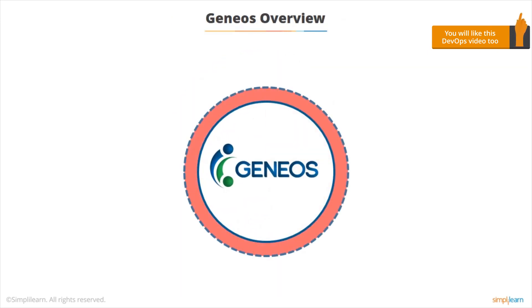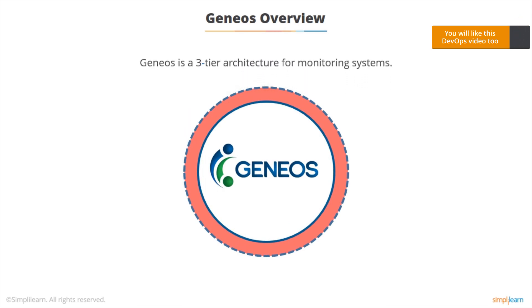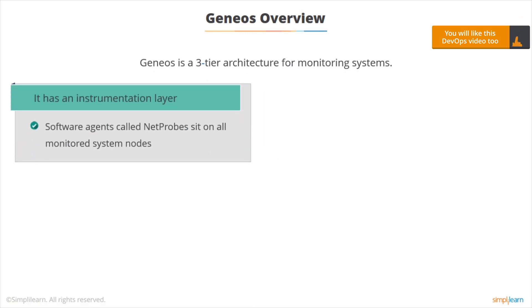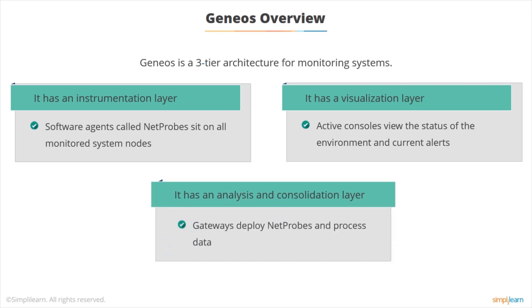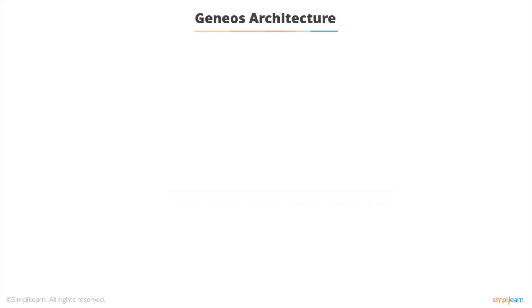Another monitoring tool is Geneos, which is fairly sophisticated and uses a three-tier architecture with three different layers. The bottom layer is the instrumentation layer, which contains net probes — agents that sit on the monitored system components and report back to the central service. Above that is the analysis and consolidation layer, which enables net probes to be deployed and data to be processed. Then there's the visualization layer at the front end, called active consoles, where you can see the status of the environment and any current alerts.